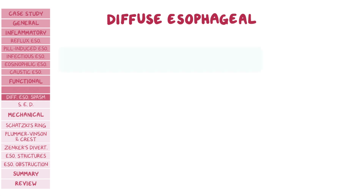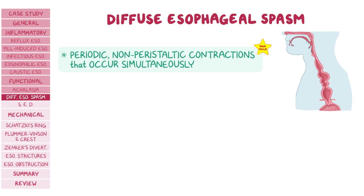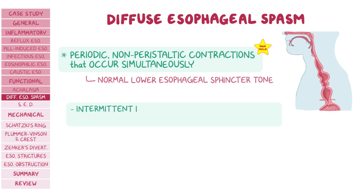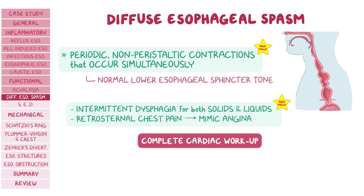In diffuse esophageal spasm, there are periodic non-peristaltic contractions that occur simultaneously with each other. In contrast to achalasia, diffuse esophageal spasm is associated with a normal lower esophageal sphincter tone, since the spasms occur in the walls of the esophagus. These disorganized involuntary esophageal contractions can cause intermittent dysphagia for both solids and liquids, and occasional retrosternal chest pain. The pain can mimic angina but is not associated with physical activity and is not relieved by rest; however, it can still resemble unstable angina, so every suspected case should undergo a complete cardiac workup.